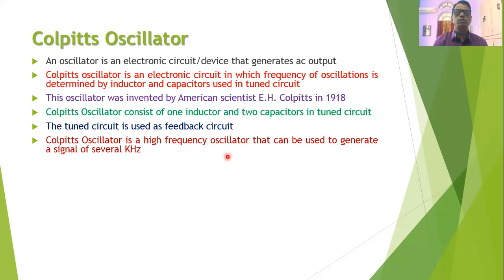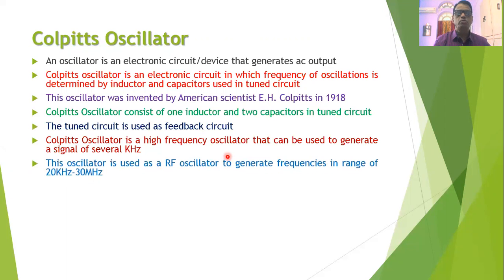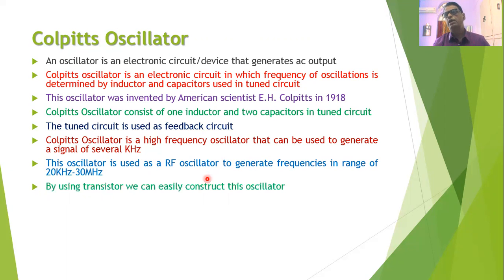Like the Hartley oscillator, the Colpitts oscillator is a high-frequency oscillator capable of generating signals from several kilohertz up to megahertz. It can be used as a radio frequency oscillator generating frequencies in the range of 20 kHz to about 30 MHz. It can be constructed using a transistor amplifier or an operational amplifier, since every oscillator requires an amplifier in its circuit.